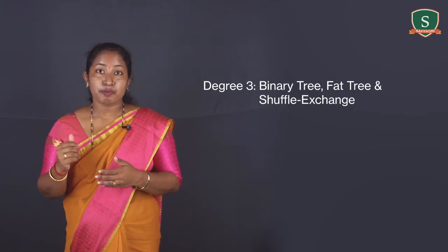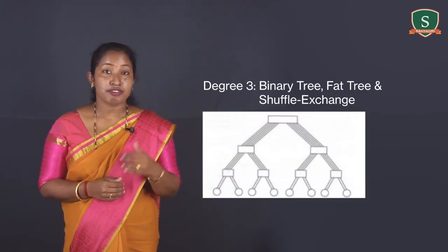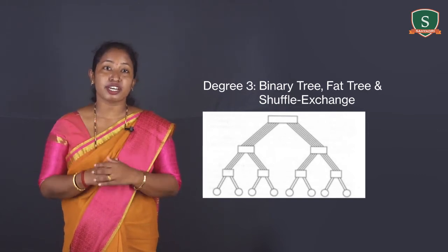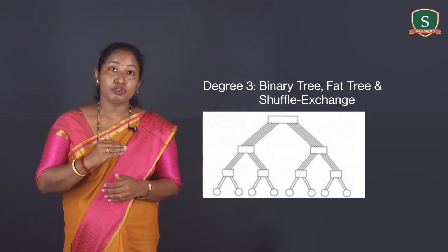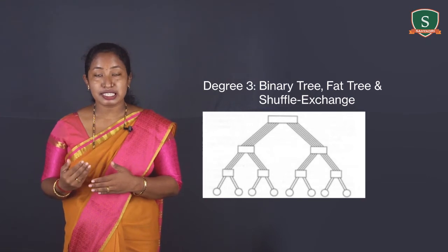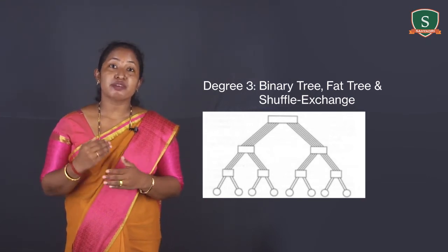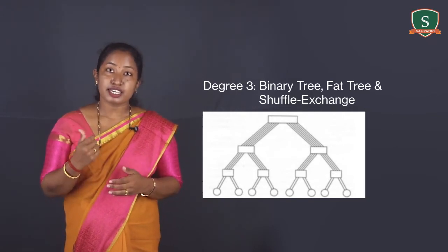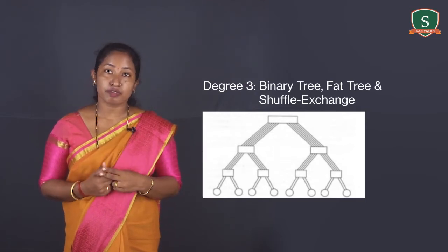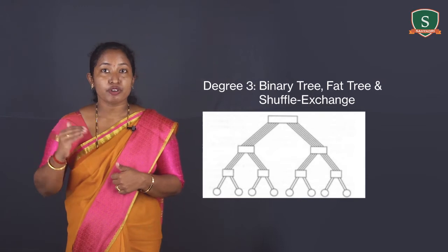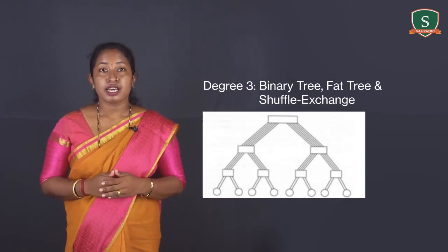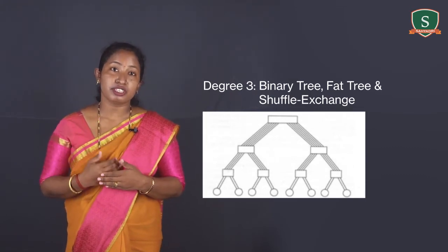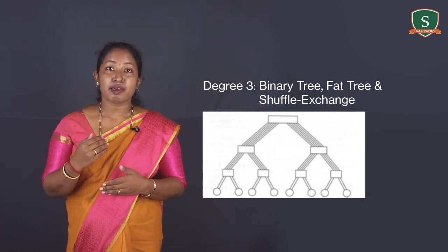To reduce this problem, fat trees were introduced. Fat trees are more like a real tree in which the branches get thicker near the trunk. Proceeding up from the leaf nodes of a fat tree to the root, the number of communication links increases, and therefore the communication bandwidth also increases. The structure of the fat tree is based on the binary tree. Each edge of the binary tree corresponds to two channels of the fat tree — one from parent to child and another from child to parent. The number of communication links in each channel increases as we go up the tree from the leaves, determined by the amount of hardware available.